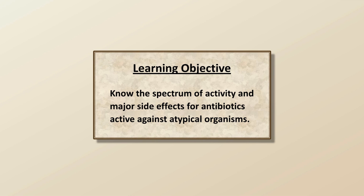If you recall from Lecture 1, atypical bacteria is an inexact term applied to bacteria which are particularly unusual in cellular structure, morphology, biochemistry, or life cycle.